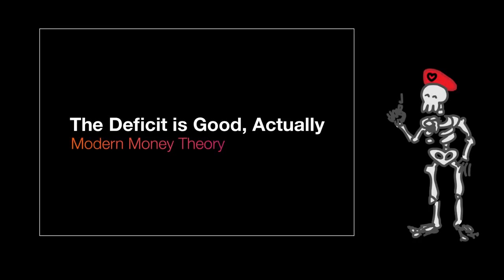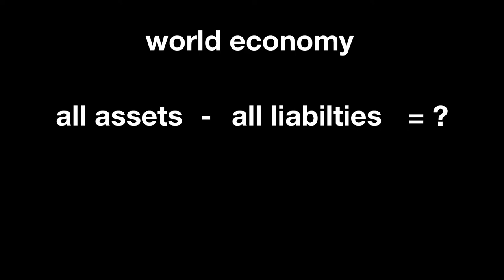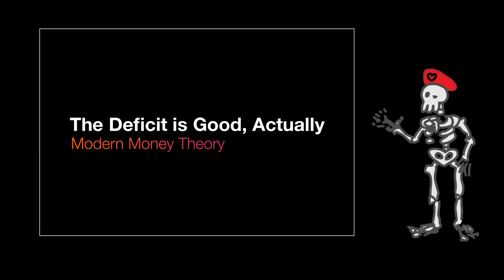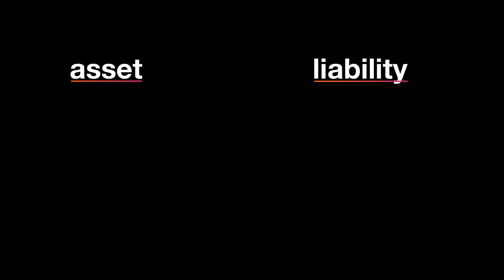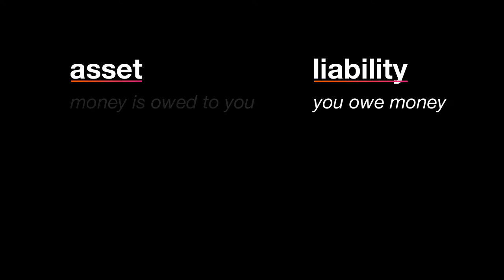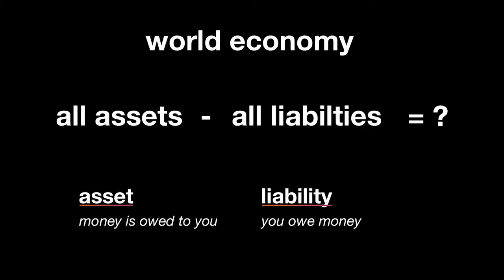I always love explaining this part. People always seem to get just as big a kick out of it as I did when I first learned it. Consider the entire world economy. Let's look at the grand total value of all the assets in the world and subtract away the total value of all the liabilities in the world. What's an asset and what's a liability? Think of assets as wealth and liabilities as debt. A liability is when you owe someone money, and an asset is when money is owed to you. What would you say is the total value of all of the assets in the world minus the value of all the liabilities in the world?